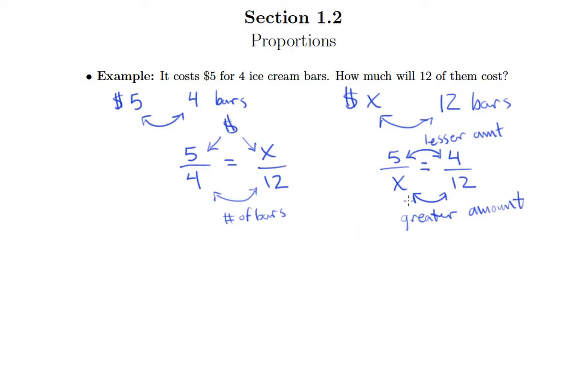It is possible to set up proportions incorrectly, however. So an example would be if I had the 12 on top here and the 4 on bottom, then I would have the lesser amount of money going with the greater number of bars both on top, and then the greater amount of money going with the lesser number of bars, and so they can't be mismatched like that.